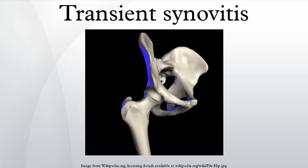Transient synovitis of the hip is a self-limiting condition in which there is an inflammation of the inner lining of the capsule of the hip joint. The term irritable hip refers to the syndrome of acute hip pain, joint stiffness, limp or non-weight bearing, indicative of an underlying condition such as transient synovitis or orthopedic infections. In everyday clinical practice, however, irritable hip is commonly used as a synonym for transient synovitis.